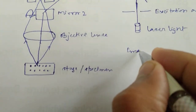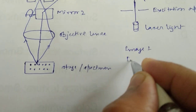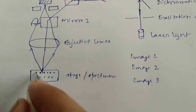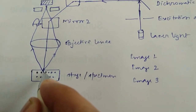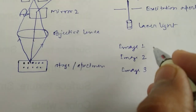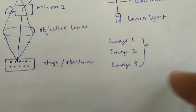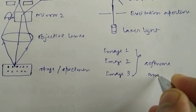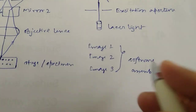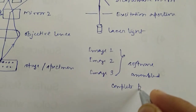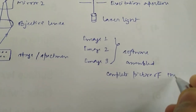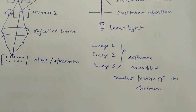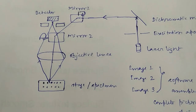The two mirrors can move to different positions so that in-focus light is collected from different points — one light focuses at this point, another light focuses on that point. At a particular time, because one light is coming and focusing on a particular point, the image will be clear. You have several images — image one, image two, image three — each corresponding to a different point. All of these images can be assembled by software, thereby generating a complete picture of the specimen.